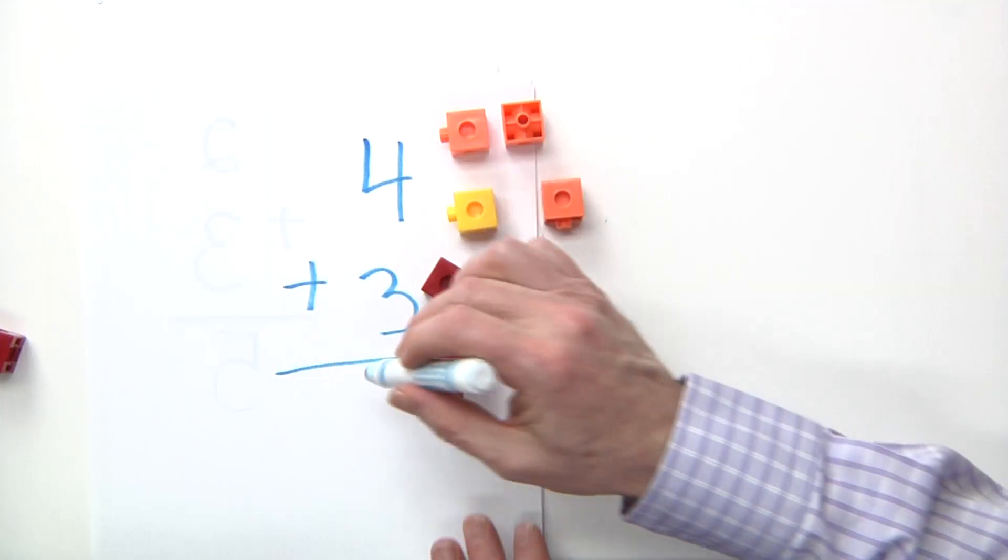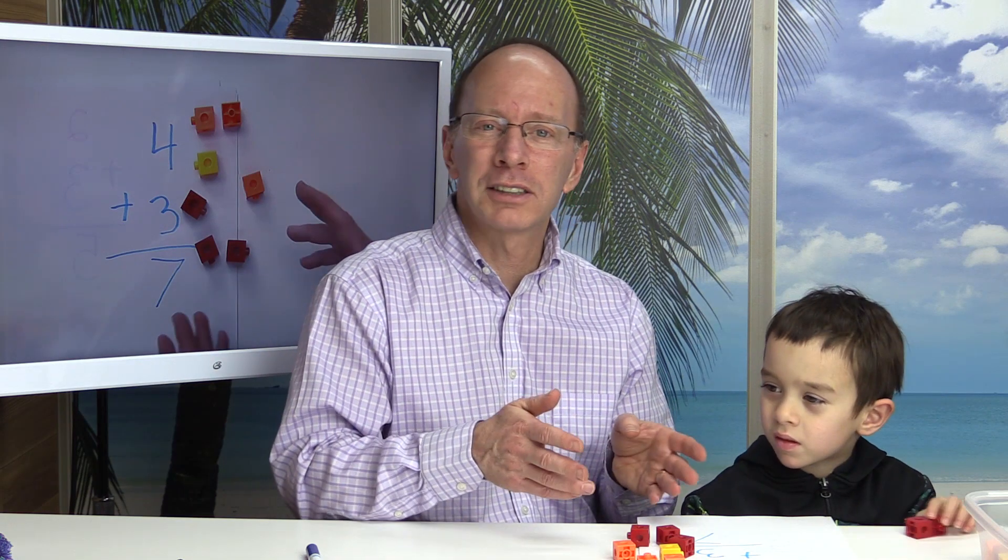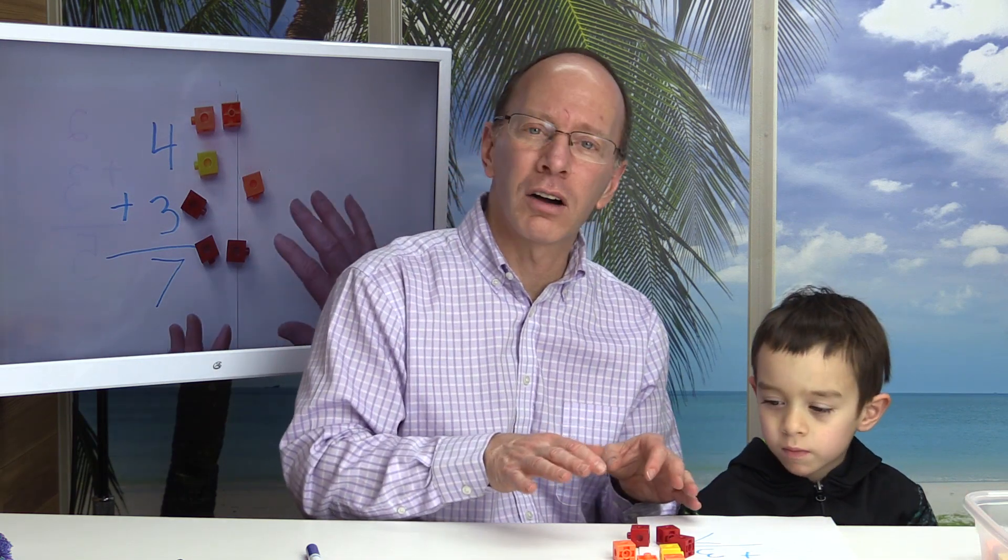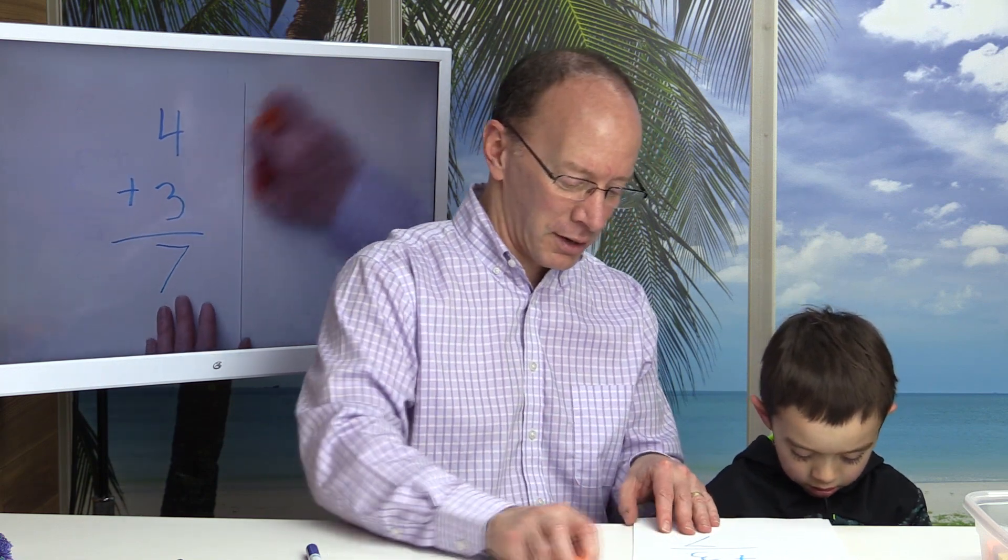Four plus three equals seven. We're using blocks to learn how to count. And they're also called manipulatives if you hear them from your teacher.